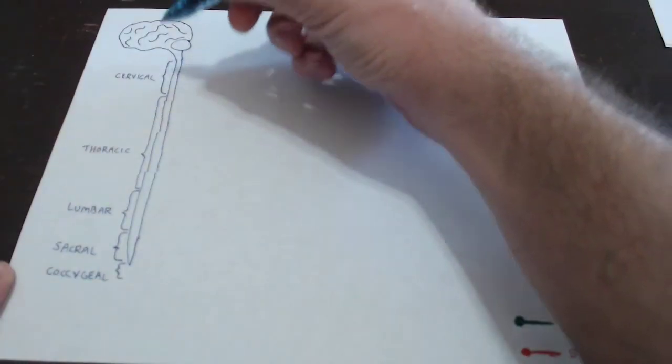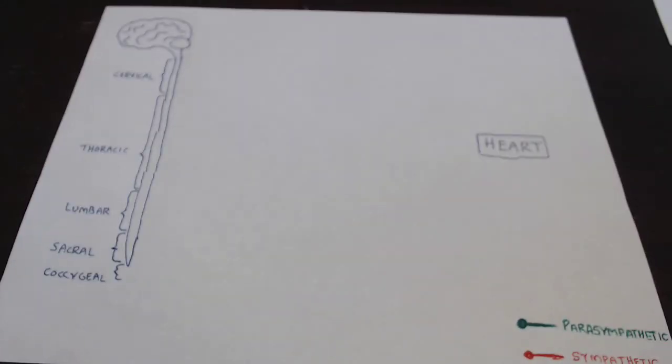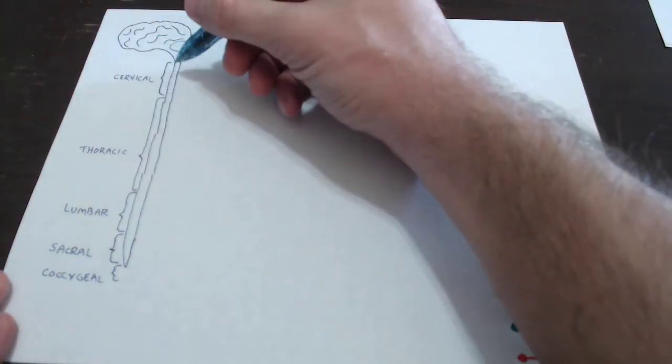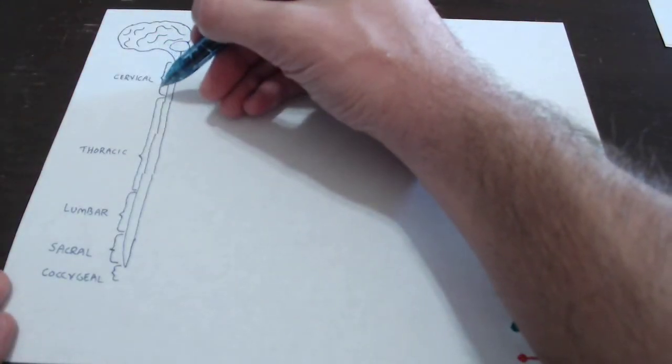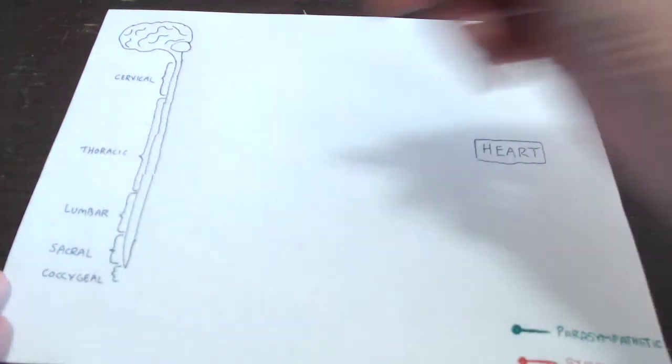For just about everything else, we typically use a spinal nerve, of which there are thirty-one different pairs. We have different pairs of nerves coming out of the cervical spinal cord, the thoracic spinal cord, the lumbar, the sacral, and finally the coccygeal.